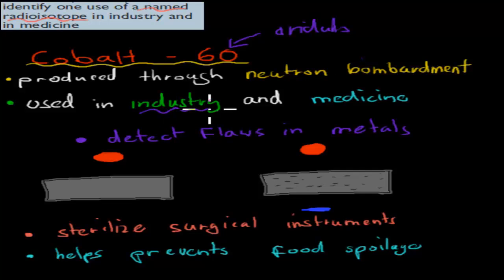And it's used in industry and medicine. So for industry, it's used to detect flaws in metals. And for preventing food spoilage. And medicine is used to sterilize surgical equipment. So for detection of flaws in metals, what actually happens is, because this is our, here, this is our cobalt-60. We're just going to call it C-60, C-O, cobalt-60.